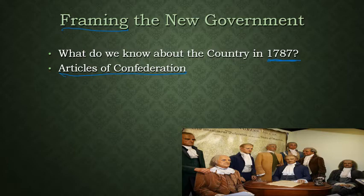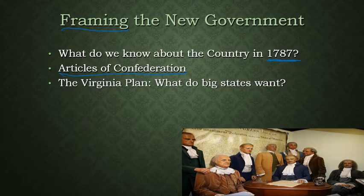But now you have a problem. The states, as they are today, are of varied sizes and therefore have varied interests. The delegates from each state want to make sure that their state's needs are being recognized and that they won't be overpowered simply by the larger states. So you have two competing ideals here.